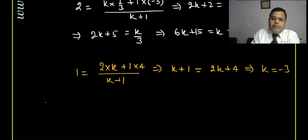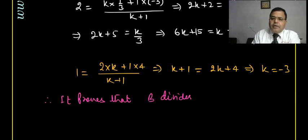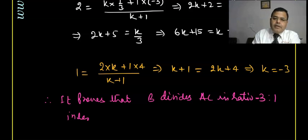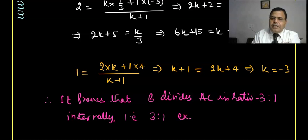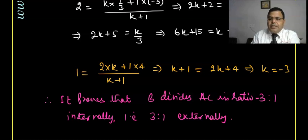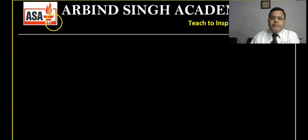Therefore it is proved that B divides AC in ratio -3:1, which means 3:1 externally. The negative sign shows that they divide externally in ratio 3:1.